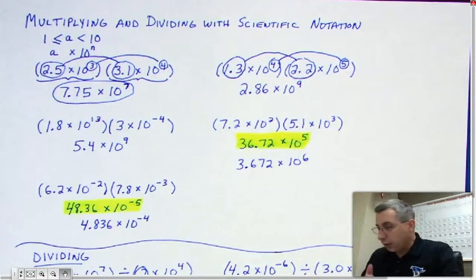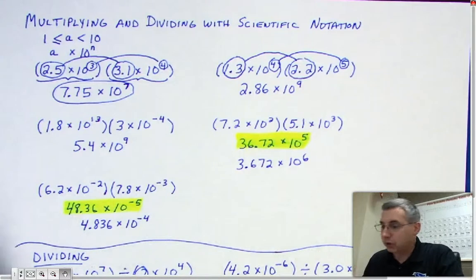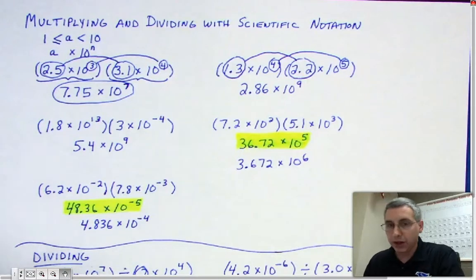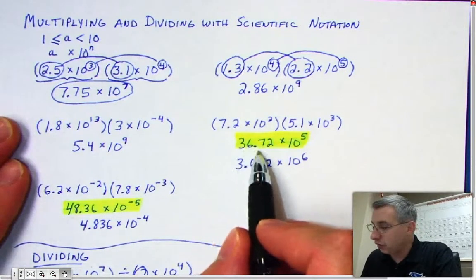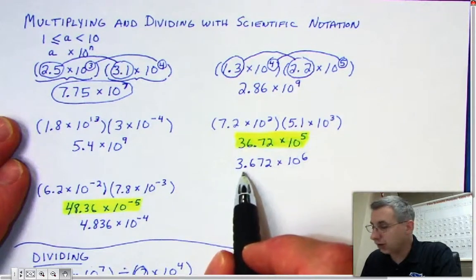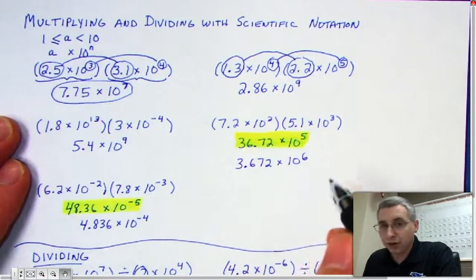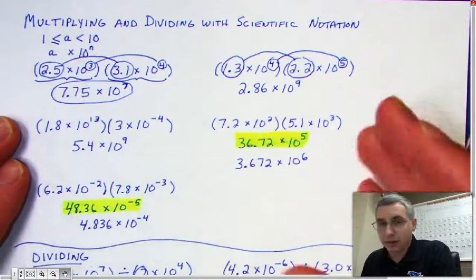You might be feeling confident about most of this but a little shaky about fixing improper scientific notation. I want to point out another way to fix it if you're not comfortable with adding or subtracting from the exponent. I've highlighted one of the problems we just did — the one that was 36.72 times 10 to the fifth — and if you correct it correctly, it should turn into 3.672 times 10 to the sixth.